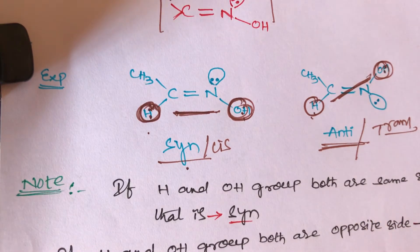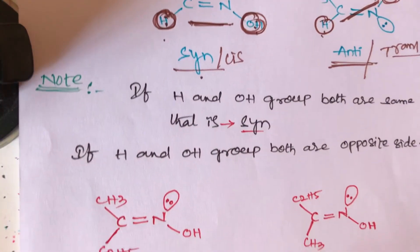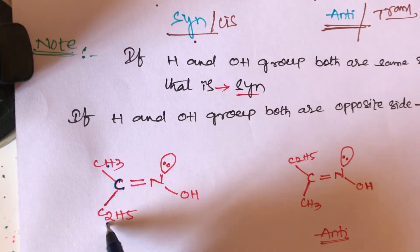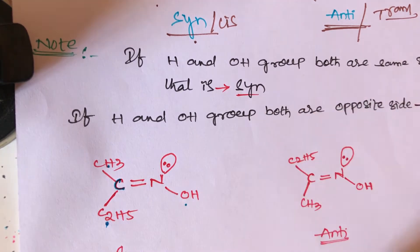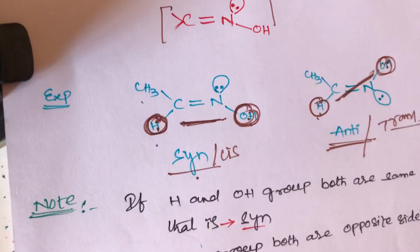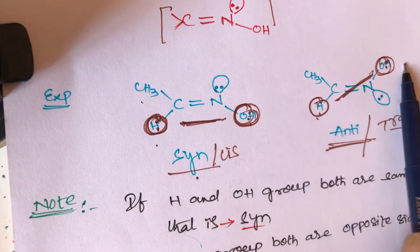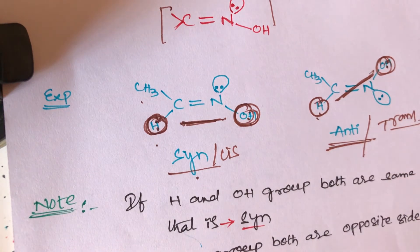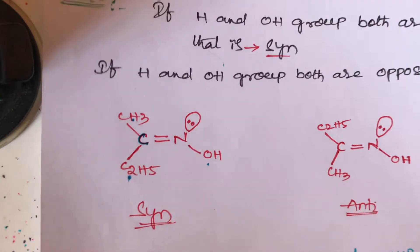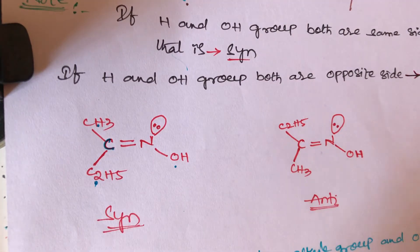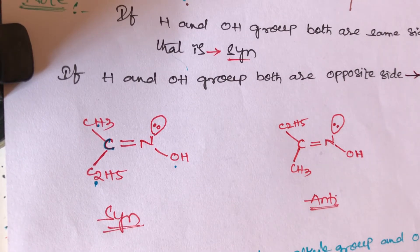Now one more example: consider a carbon with a C=N double bond having one methyl group, one ethyl group, nitrogen, and an OH group. If we have only hydrogen and OH, identification is simple. But sometimes different alkyl groups like methyl and ethyl are given — how do we identify syn or anti-oxime in that case?